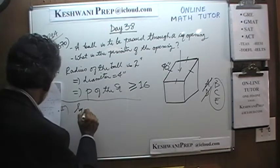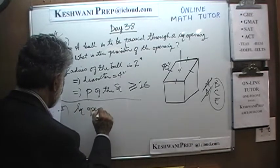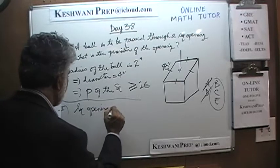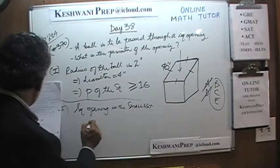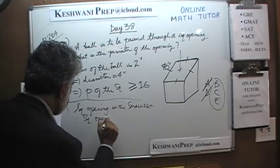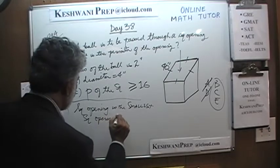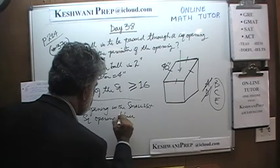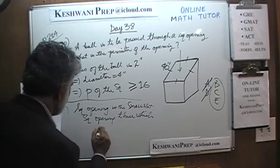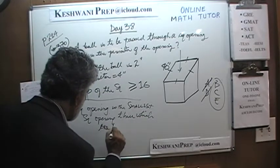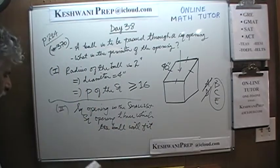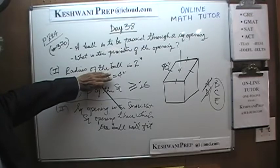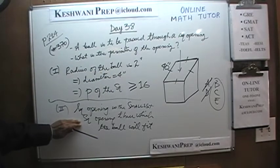It says the square opening is the smallest square opening through which the ball will fit. Again, by itself, not looking at the first statement — that doesn't tell us anything at all about the perimeter. The answer is not B.